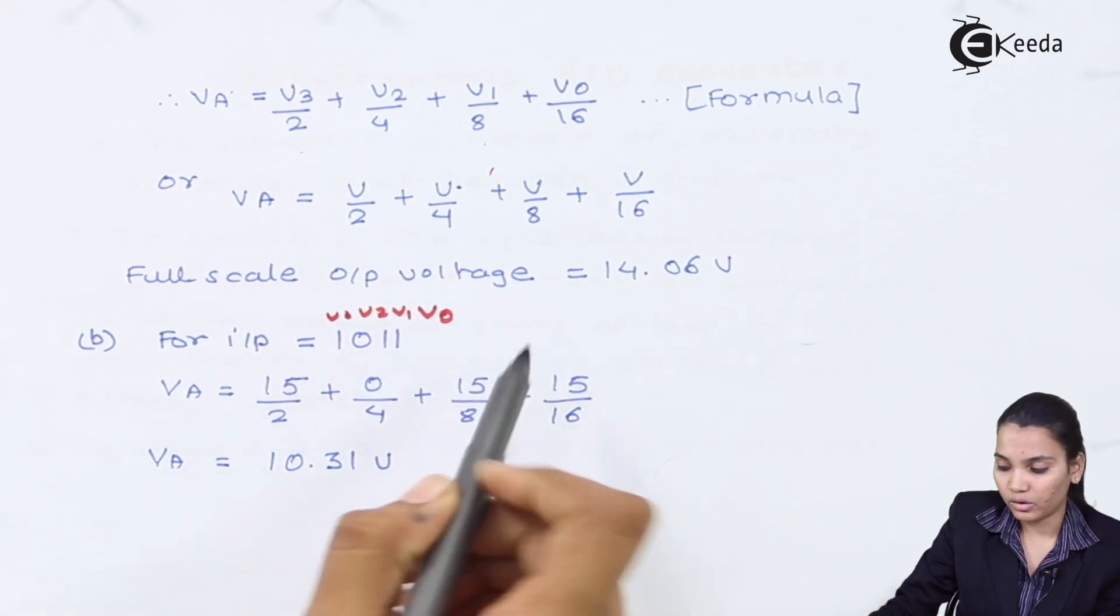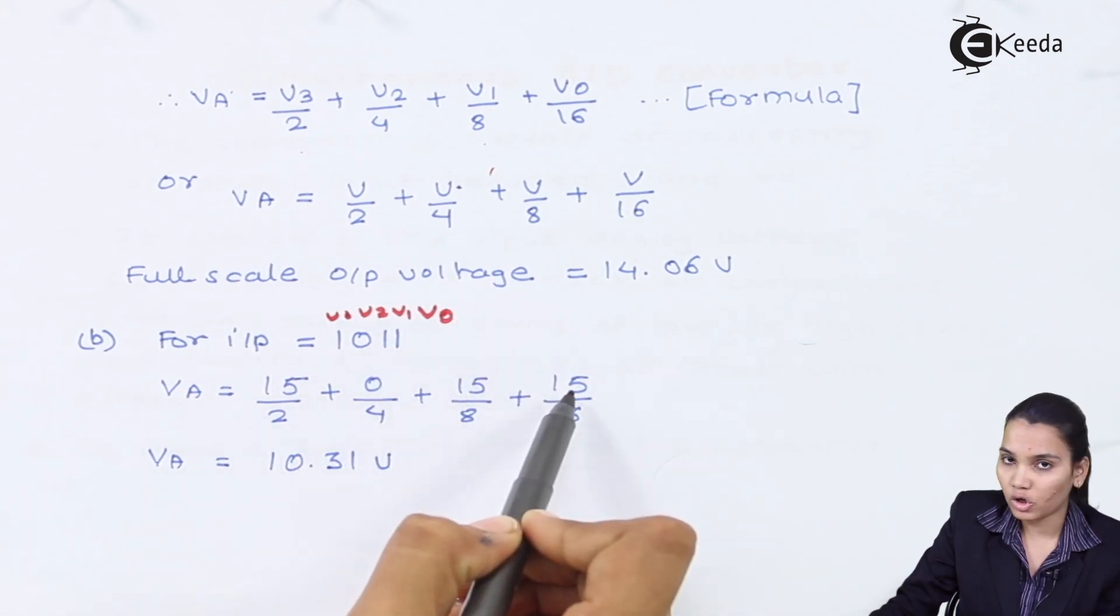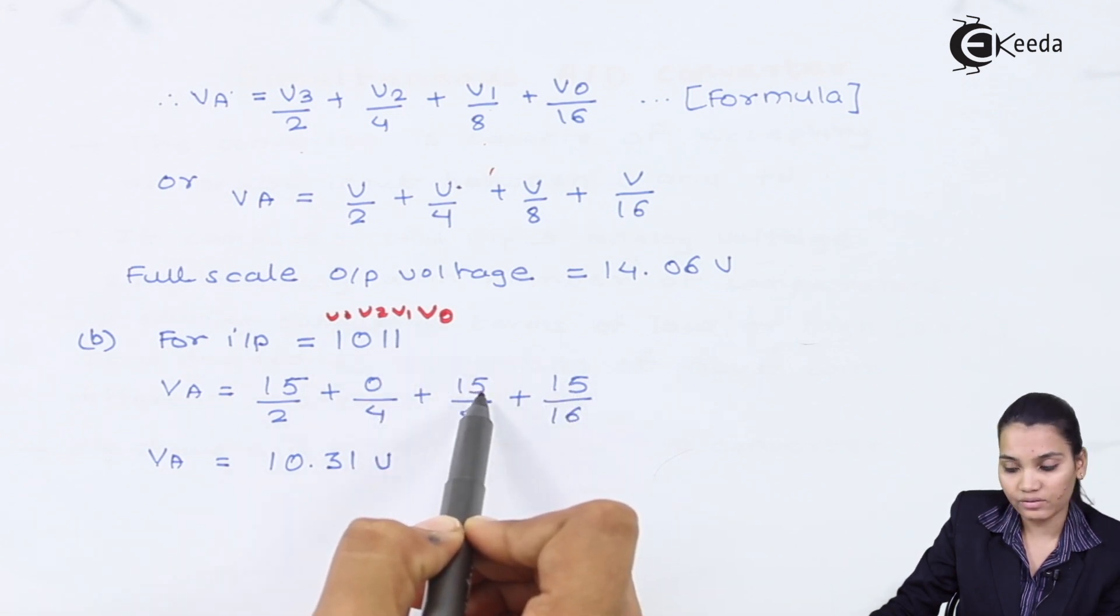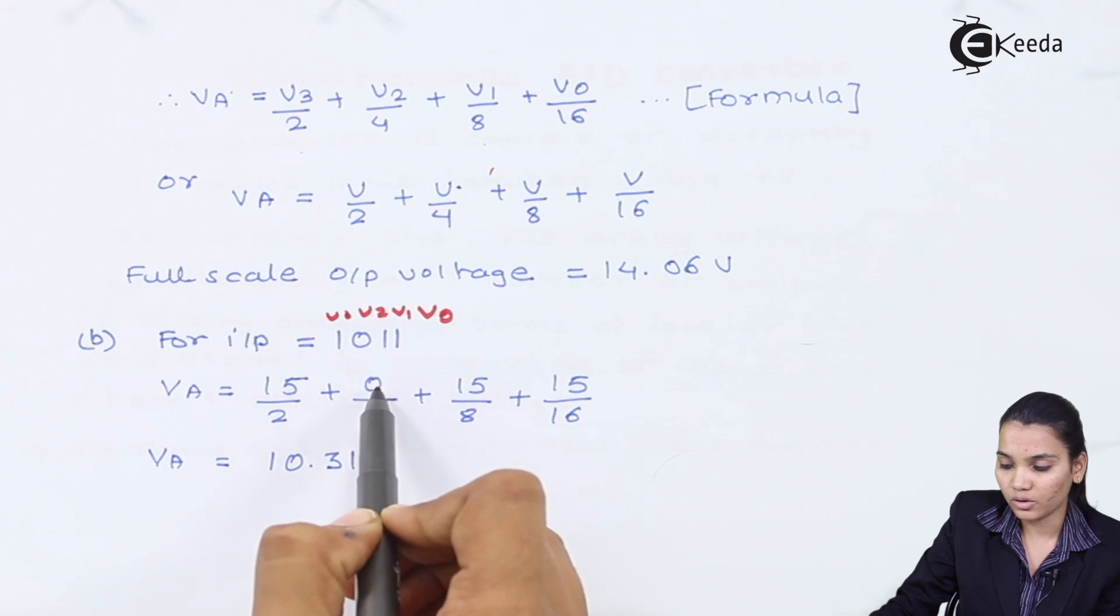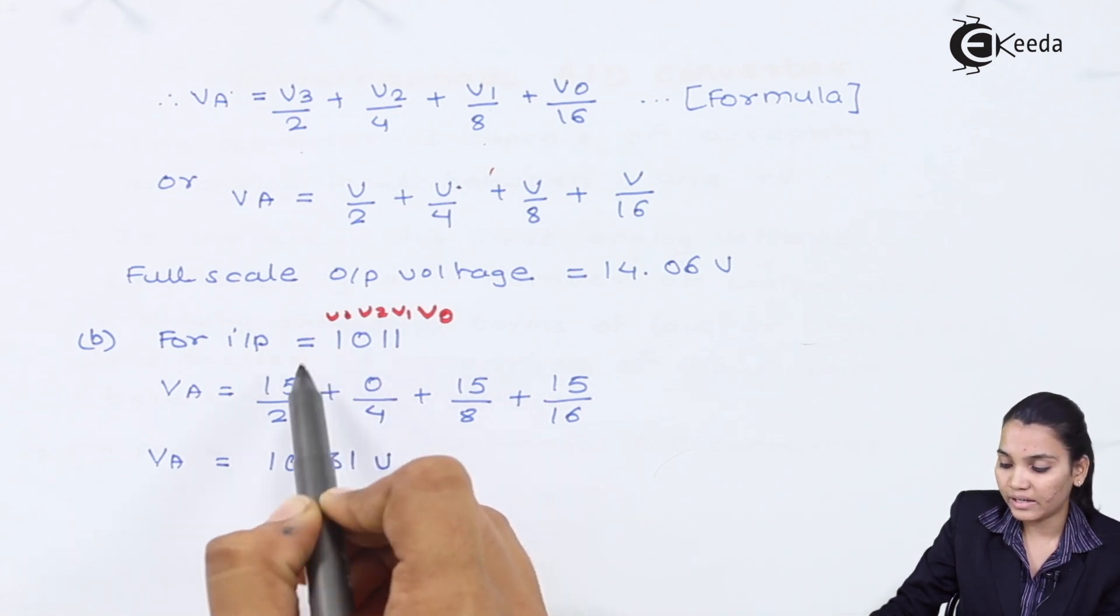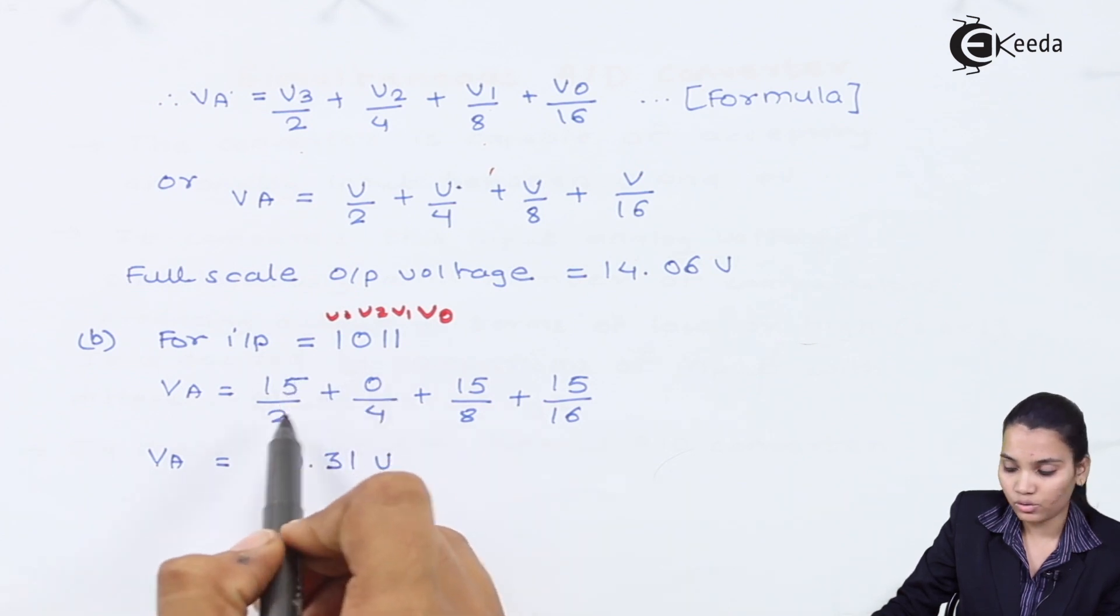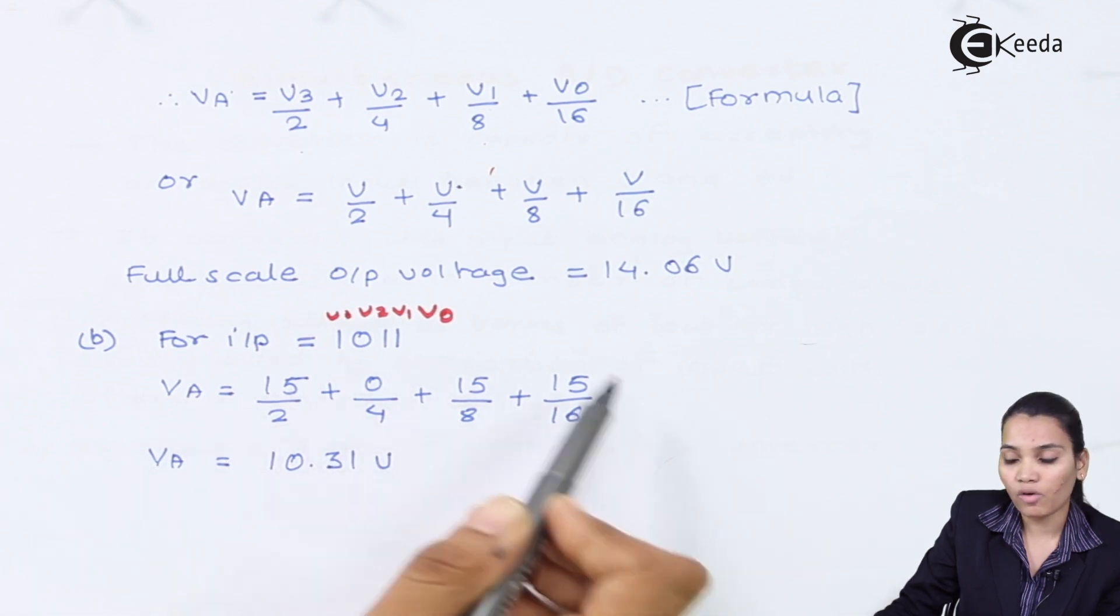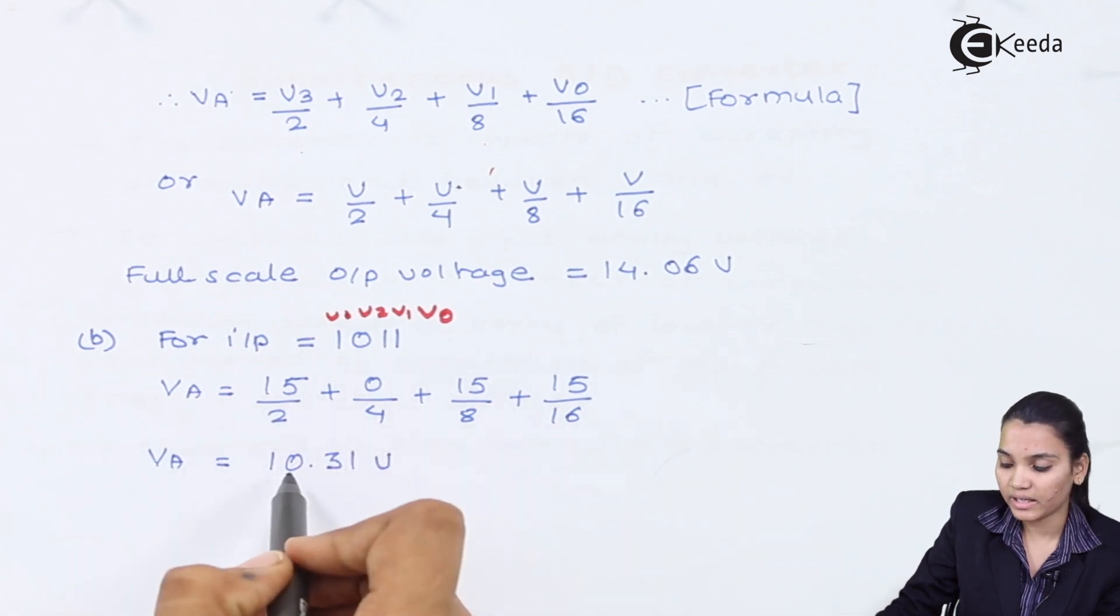Now we are going to substitute the value. V0 represents logic 1 as 15 volts. V1 represents logic 1 as 15 volts. Here V2 is 0. Therefore we have written the 0 logic represents 0 volt value and again V3 is 15. So 15/2 + 0/4 + 15/8 + 15/16. After performing the addition of all this, this will give us the value of 10.31 volts.